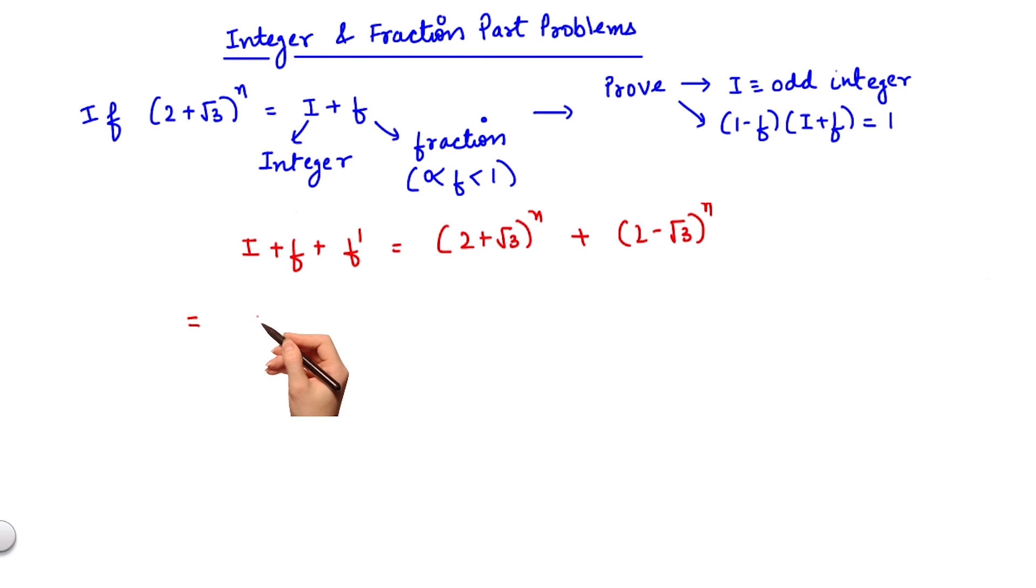Let us carry out the binomial expansion of both these terms. The expansion of the first series would be c0 2 to the power n plus c1 2 to the power n minus 2 root 3 square and so on.